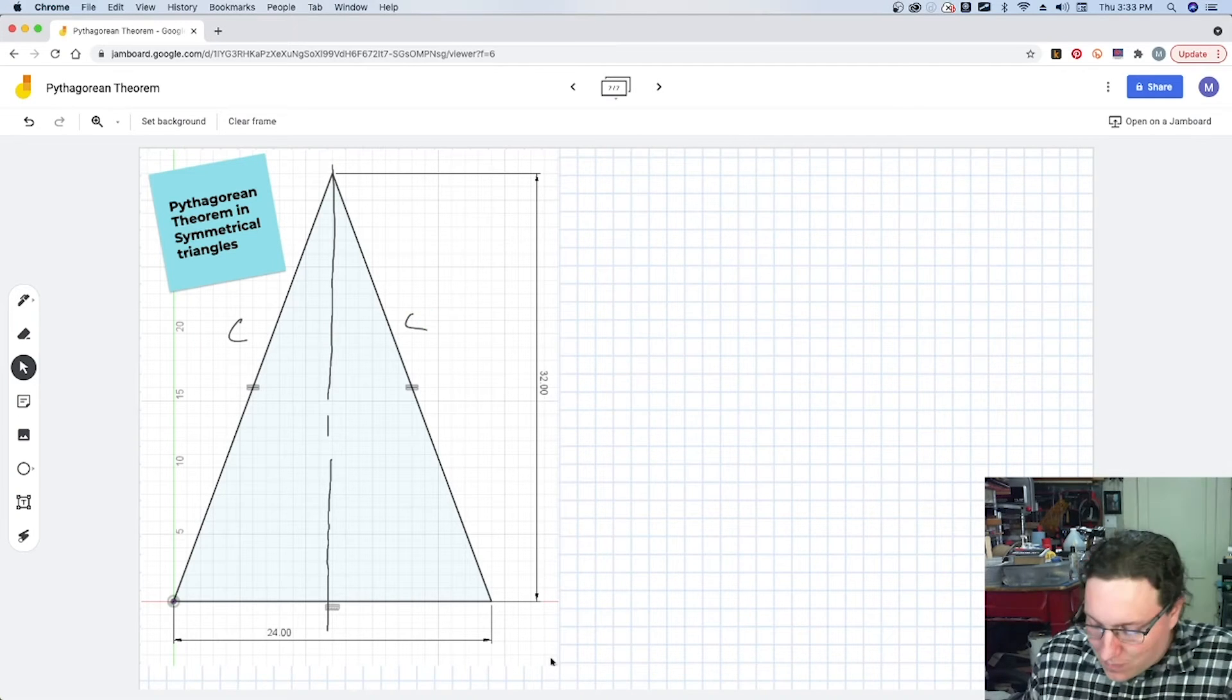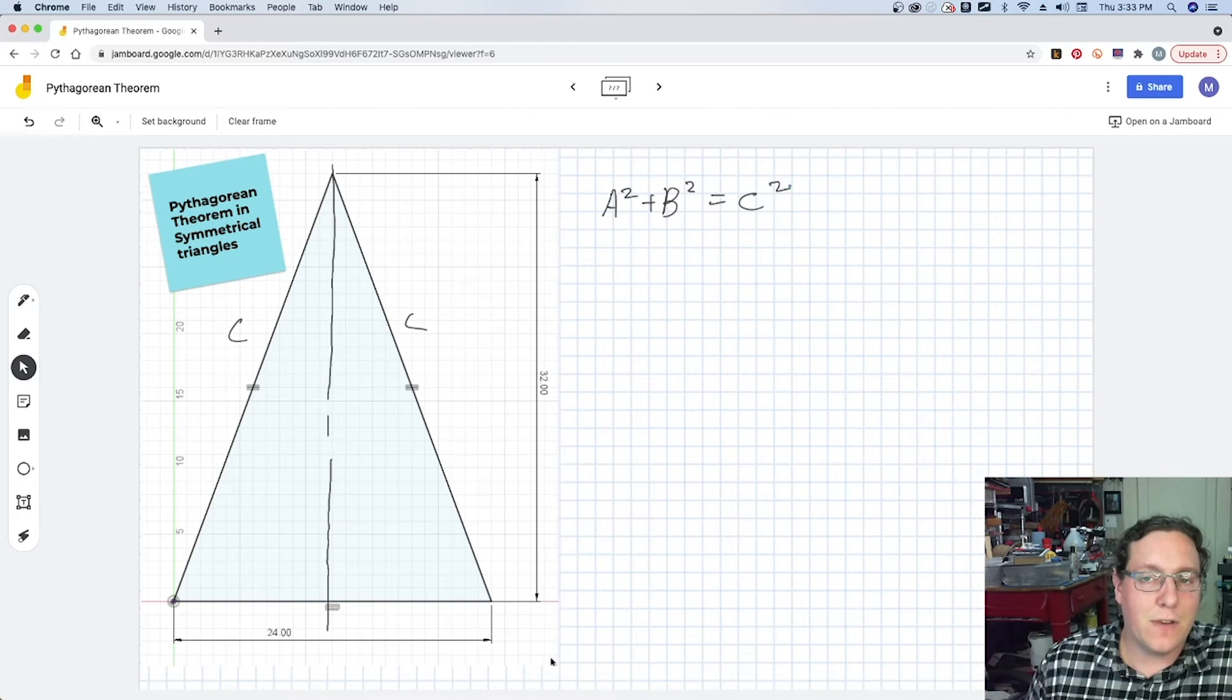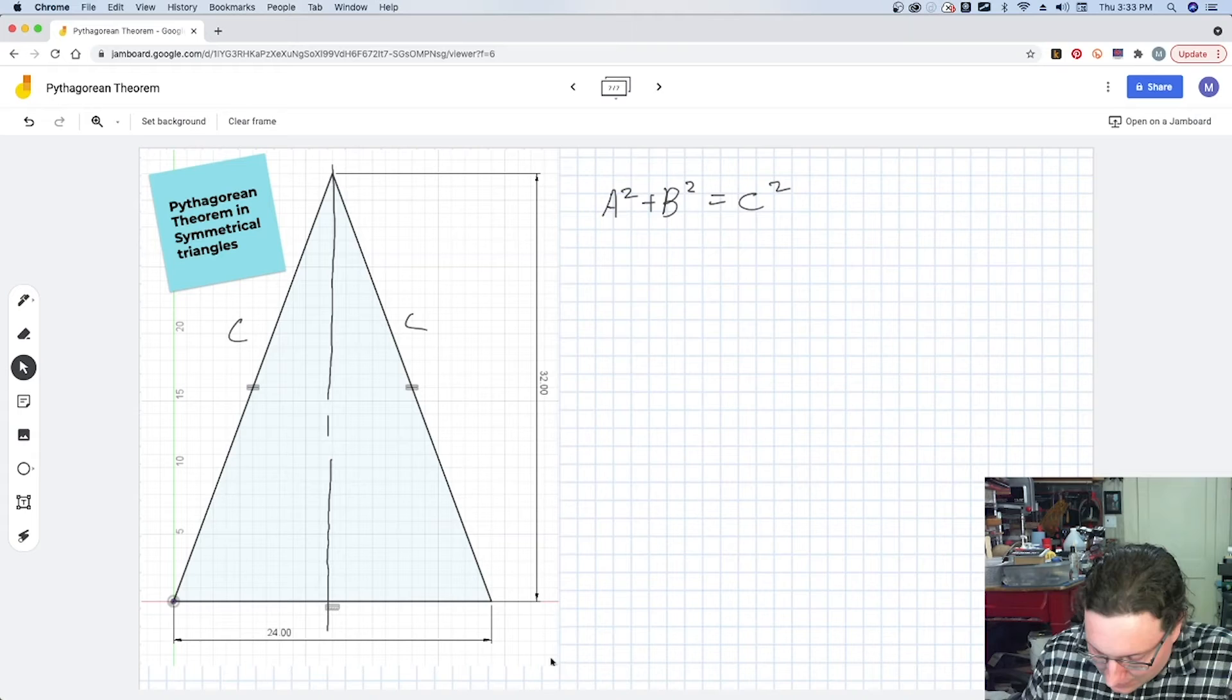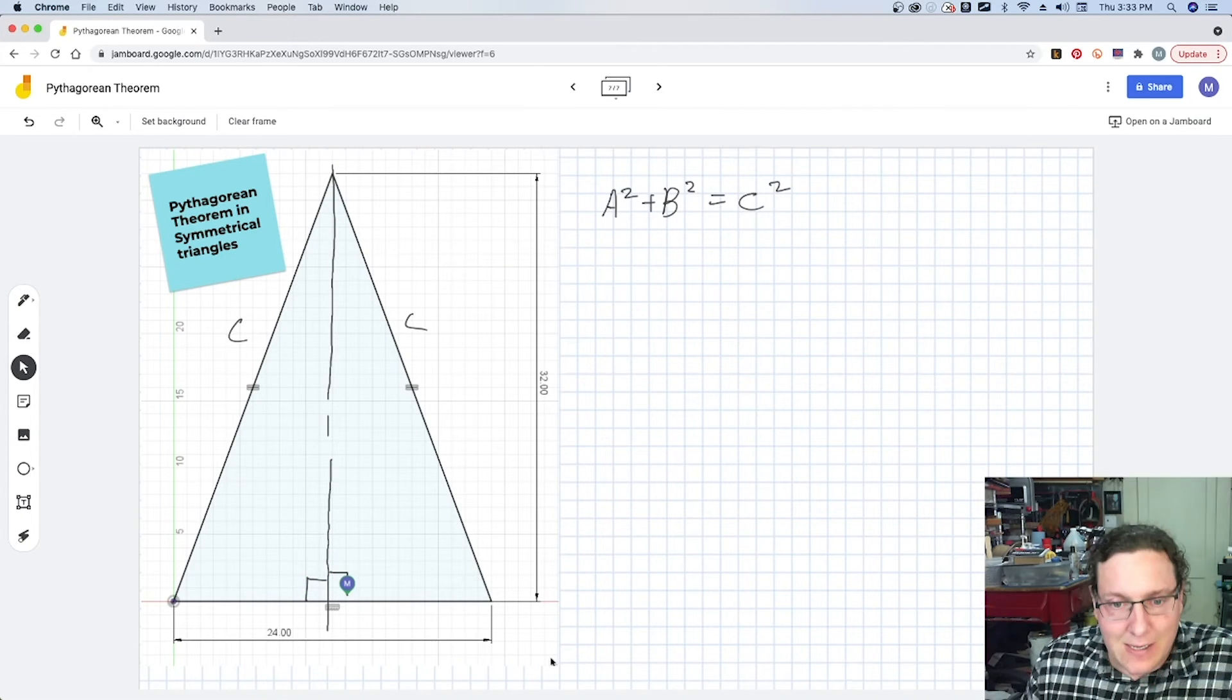Now, with Pythagorean's Theorem, we have A² + B² = C². We'll stick with that general theory. And with that symmetrical line, we know that we have a right angle down at the base.